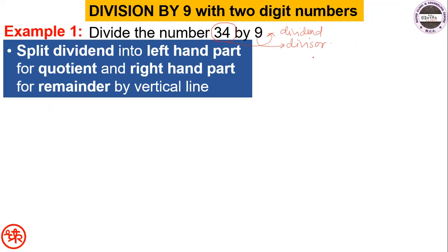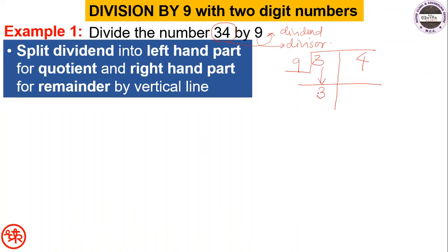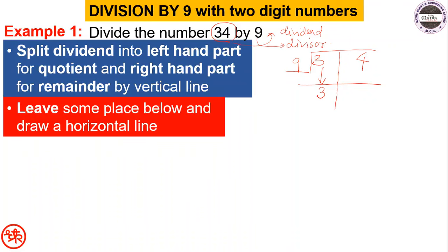So we divide 34 into two parts: 3 and 4, and we are dividing by 9. Draw a horizontal line below, leaving some space. Then put the first digit of the dividend — which is 3 — under the horizontal line.